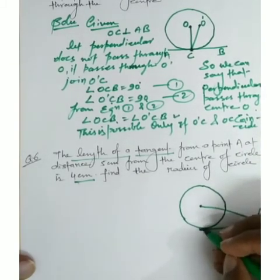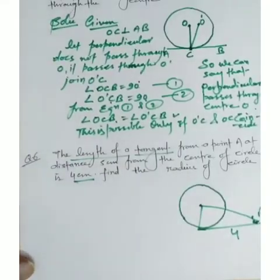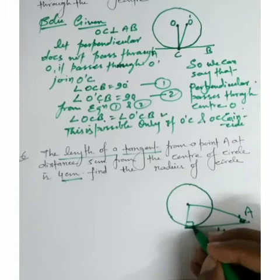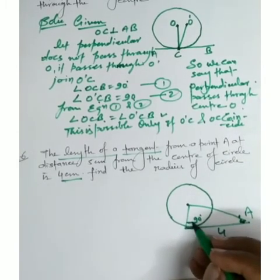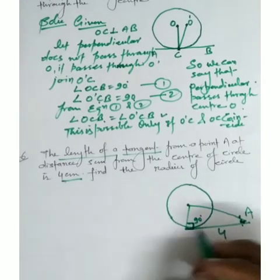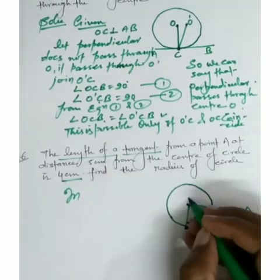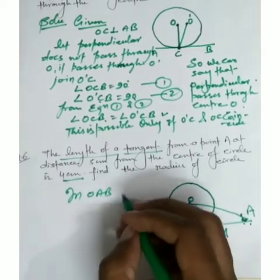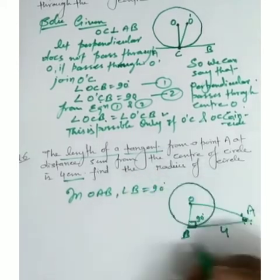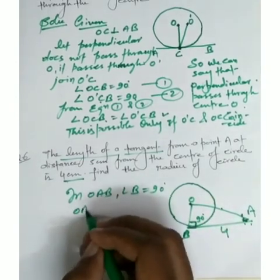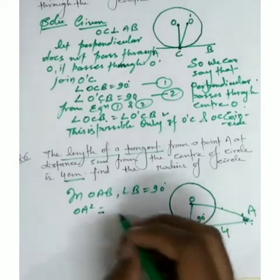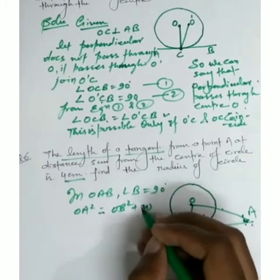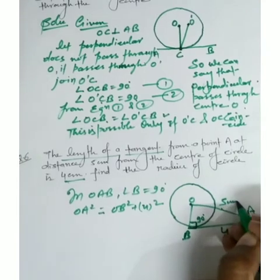Join it with the radius. The angle at the point of contact is 90 degrees because radius is perpendicular to the tangent. In triangle OAB, angle B is 90 degrees. Apply Pythagoras theorem: OA square equals OB square plus AB square. AB is 4, so AB square is 16. OA is given as 5 cm.